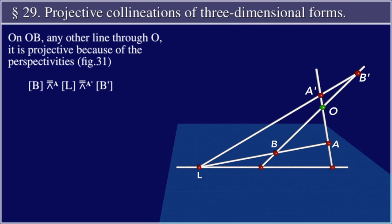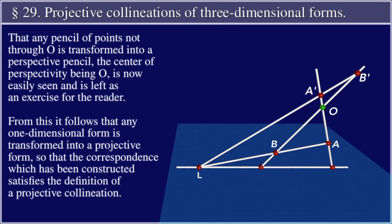On OB, any other line through O, it is projective because of the perspectivities, figure 31. The pencil B is perspective with center A to the pencil L, which is perspective with center A prime to the pencil B prime. That any pencil of points not through O is transformed into a projective pencil, the center of perspectivity being O, is now easily seen and is left as an exercise for the reader. From this, it follows that any one-dimensional form is transformed into a projective form, so that the correspondence which has been constructed satisfies the definition of a projective collineation.